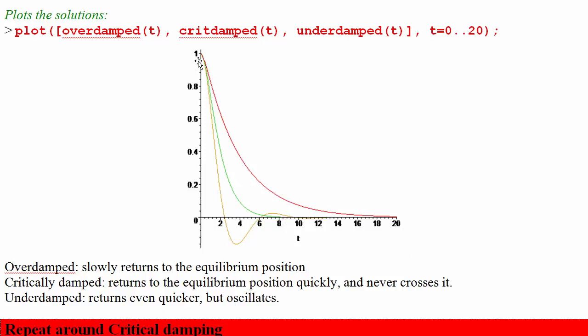The underdamped crosses the equilibrium point, maybe oscillates a bit, and the critically damped looks like it gets close to the equilibrium position relatively fast. Maybe it's the fastest one without crossing.